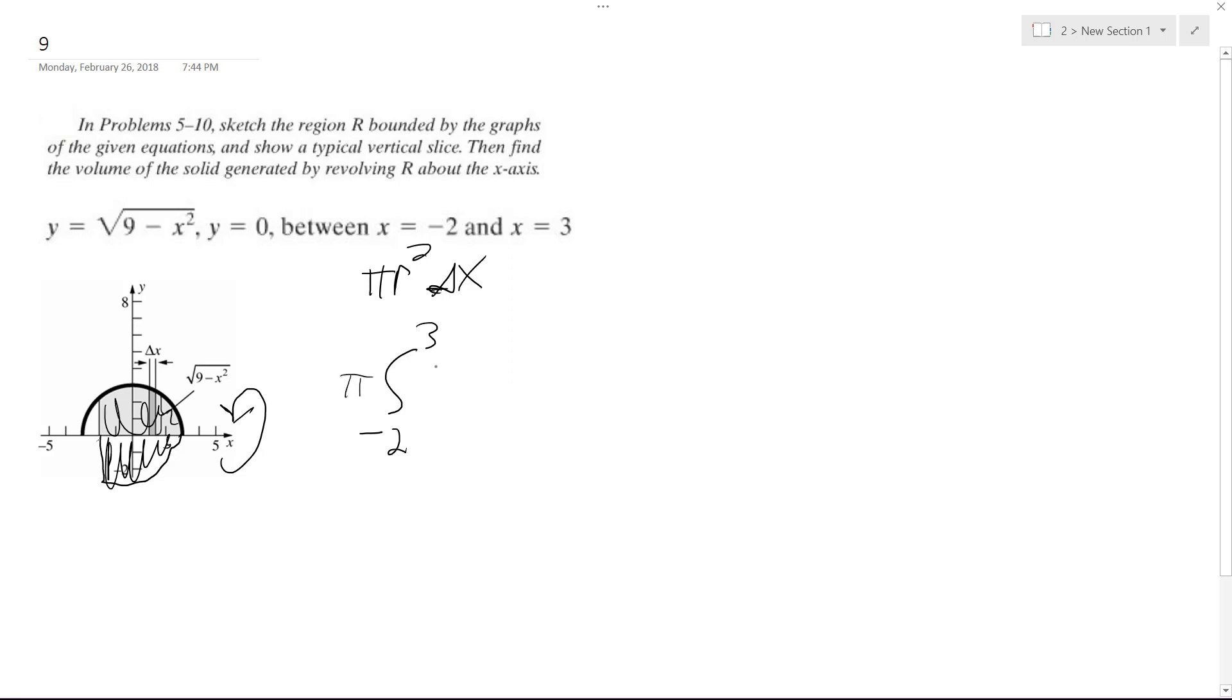And then we're going to take the square root of 9 minus x squared, so we get 9 minus x squared, dx. So what we end up with is pi times 9x minus x cubed over 3, from negative 2 to 3.